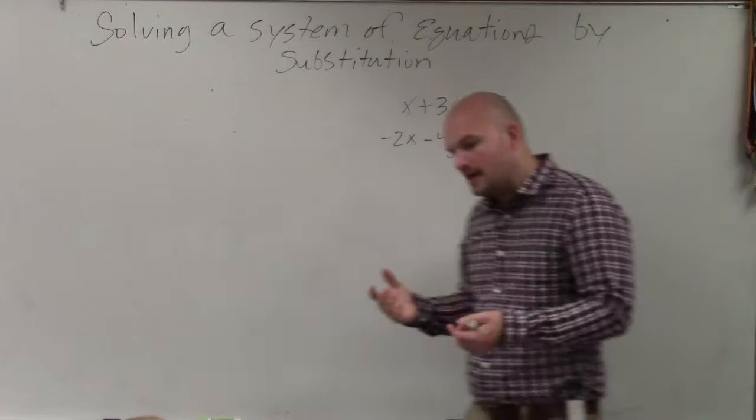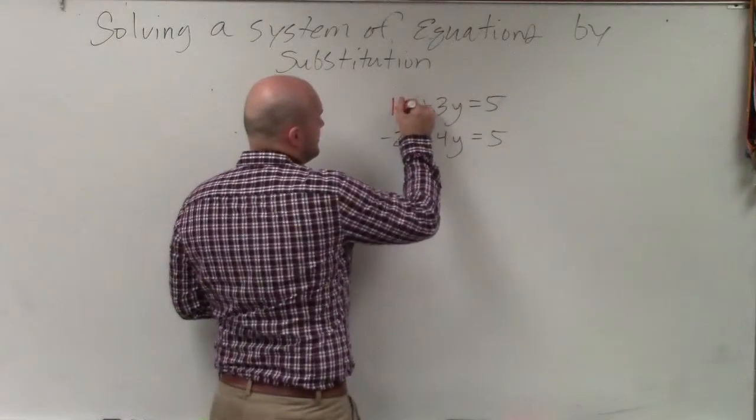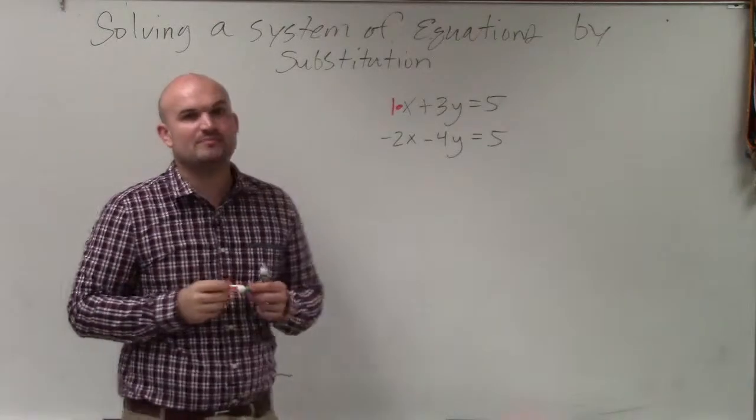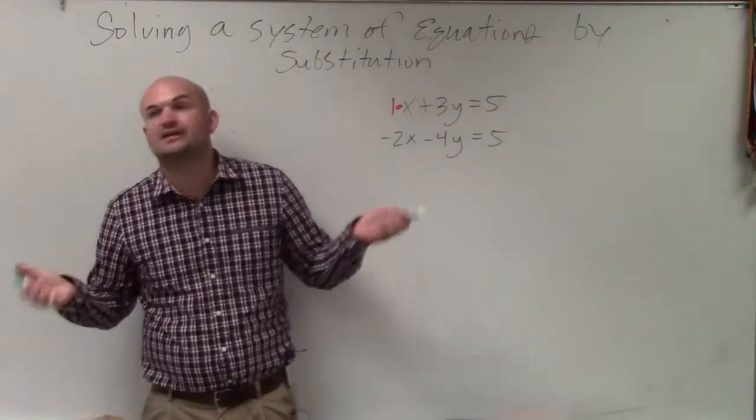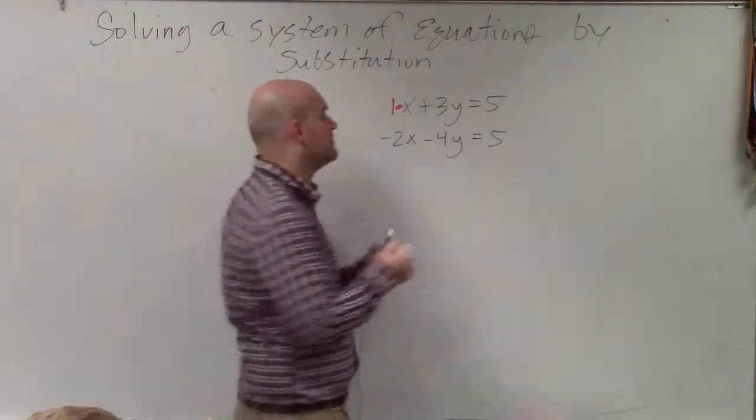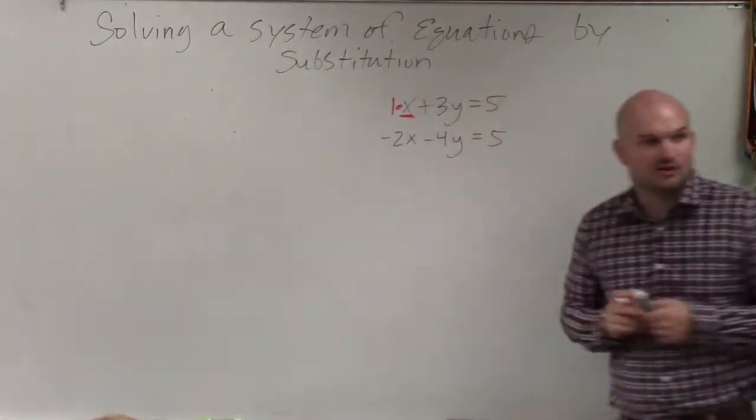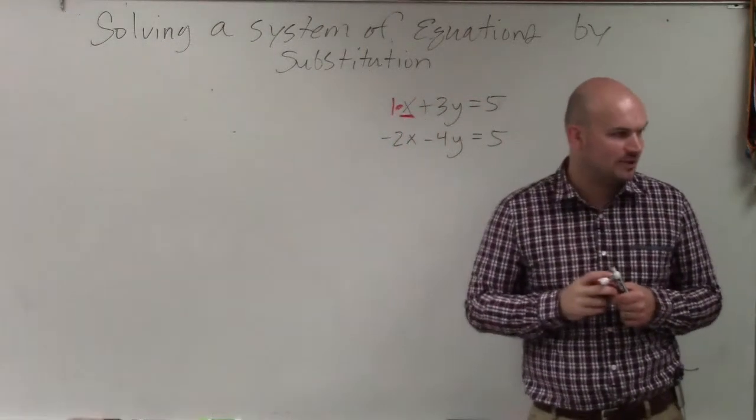So basically, what we're looking for is a variable that is by itself, because that basically means that it's being multiplied by 1. And if it was a negative, then it would be multiplied by negative 1. Does everybody follow me? Yes? OK. So you guys can see that x is my variable that has a coefficient of 1 or negative 1. All right?